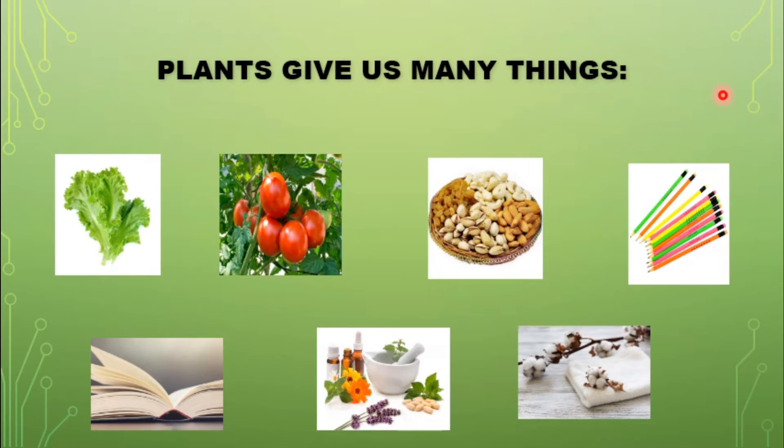Sometimes we use plant parts directly. For example, food and leaves. And sometimes we use plant products such as pencil, paper, medicine, oil and clothes. There are many things that we get from plants that we use in our daily routine.